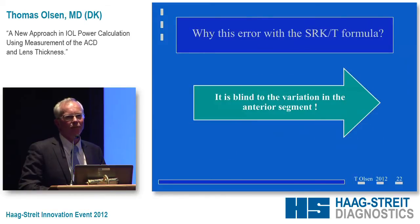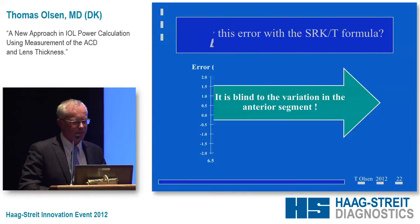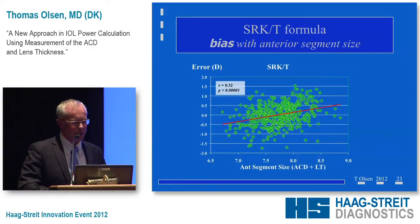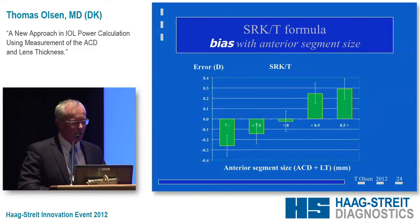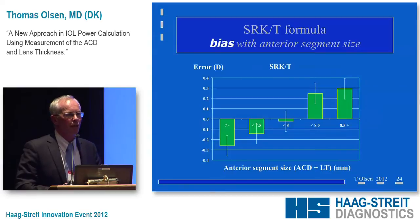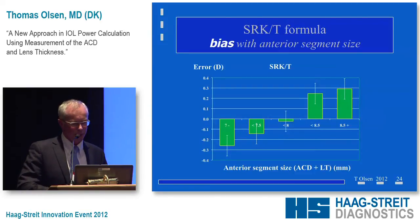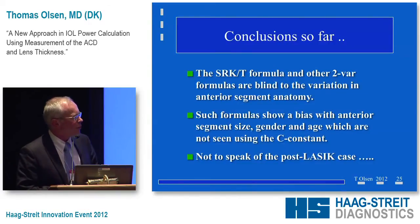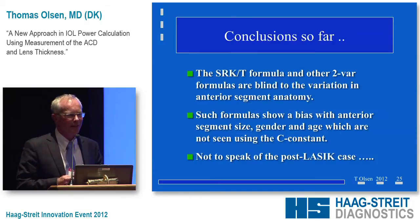Why do we have error with the SRK-T? It is blind to the variation in the anterior segment. Plotting the SRK-T error against anterior segment size — that is, ACD plus lens thickness — shows a significant correlation, meaning the formula has a bias. The span of that error is 0.6 diopters, from minus 0.3 to plus 0.3 diopters, correlated with anterior segment size. All formulas using only K and axial length have a bias with anterior segment size.